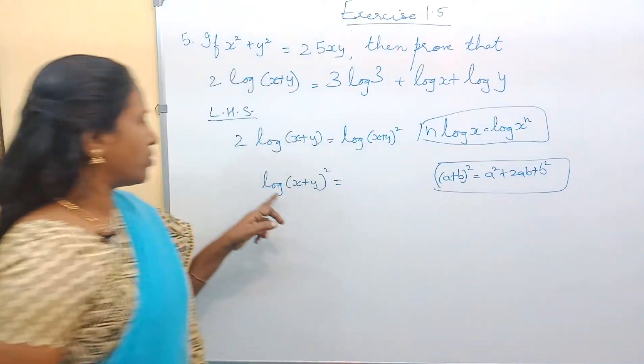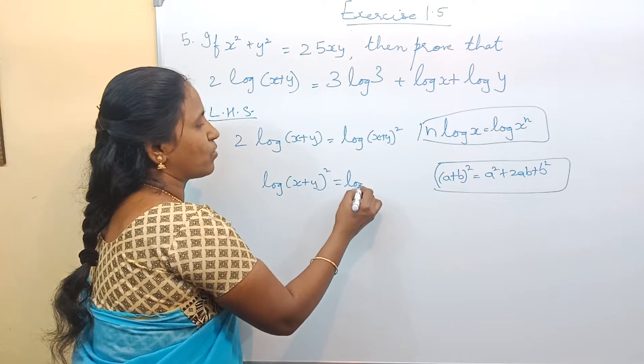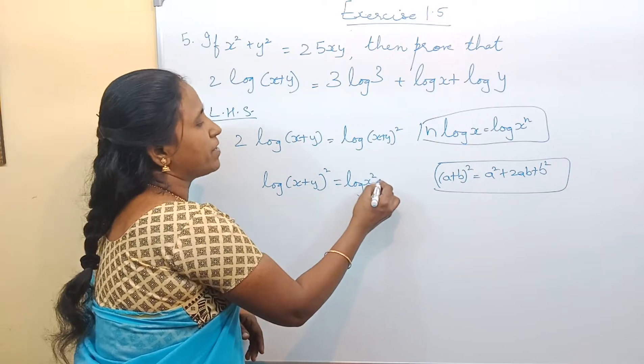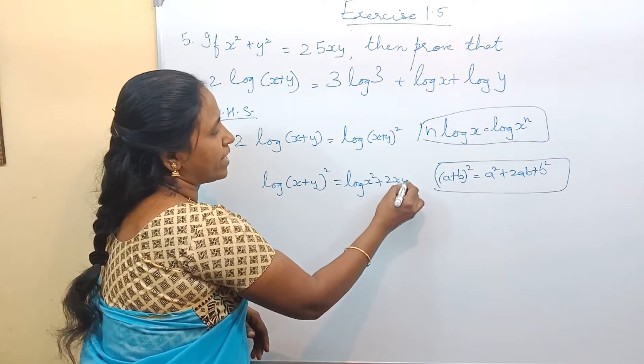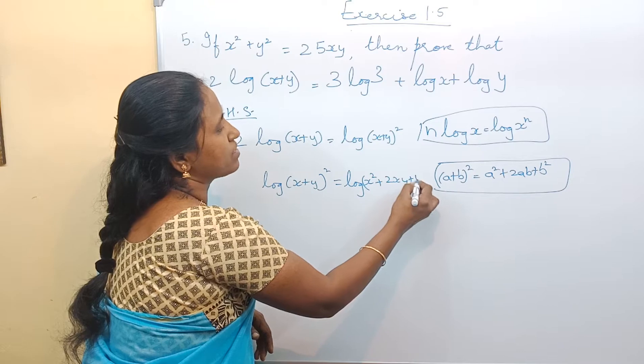So here what do we do? Log(x+y)² whole square is log(x² + 2xy + y²). Okay?